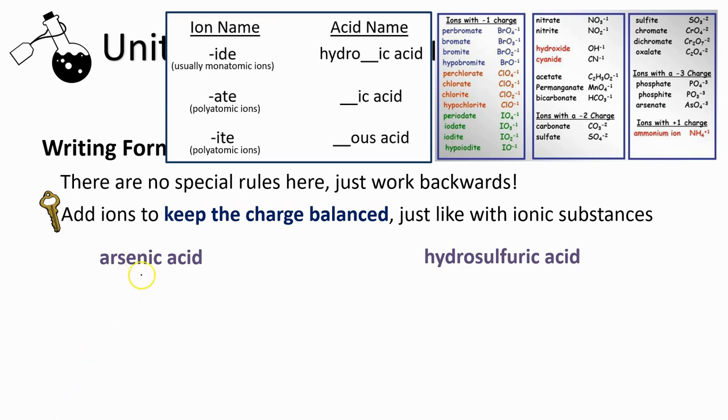Let's take a look at writing the formula for arsenic acid. The first piece of the puzzle is the easiest, and that is because we know it's an acid based on the word acid at the end of the name. You can start off by writing hydrogen. That's going to be the case for any acid formula.